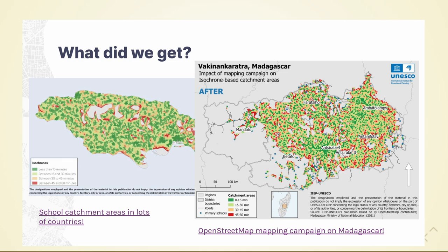Another image from UNESCO is from Madagascar, where they didn't have enough OpenStreetMap data on local paths and roads to determine school access. So what they did was run an OpenStreetMap mapping campaign to improve the data in this region so that you could calculate school access. These are the results after the mapping campaign — you can see that most of the area is now covered, so you can calculate whether people can access a school in 15 minutes.